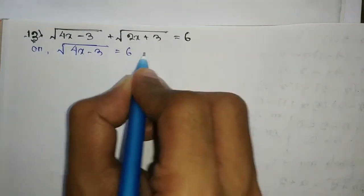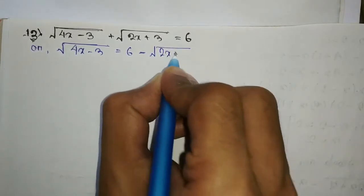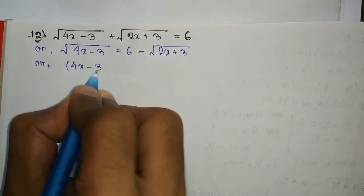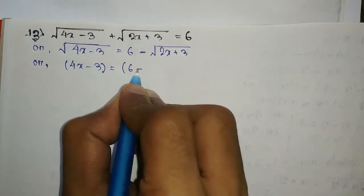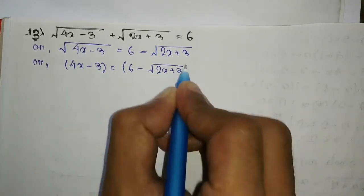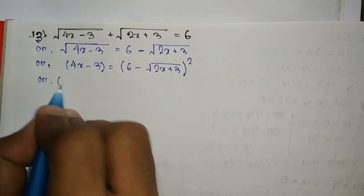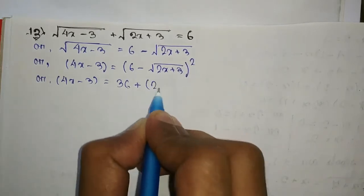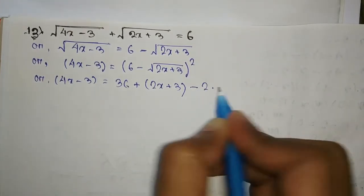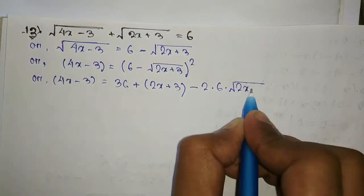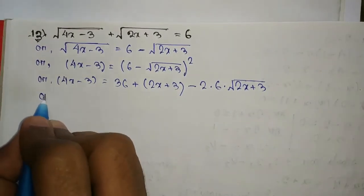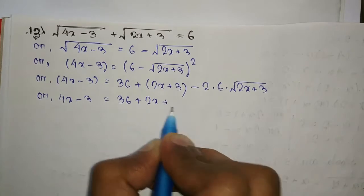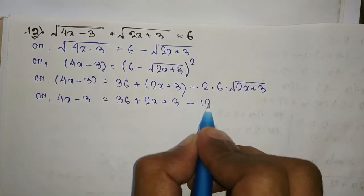We write √(4x minus 3) equal to 6 minus √(2x + 3), then squaring both sides: 4x minus 3 equals (6 minus √(2x+3)) whole square, which expands using a² + b² minus 2ab to give 4x minus 3 equal to 36 plus (2x + 3) minus 12√(2x + 3).